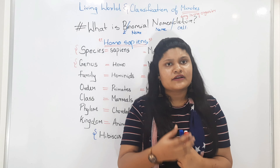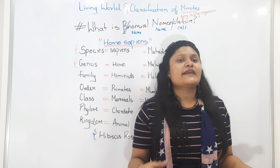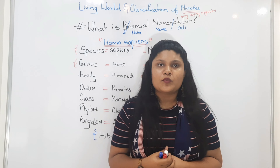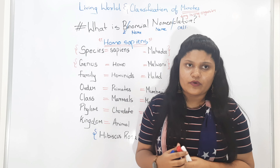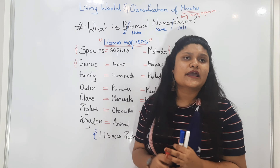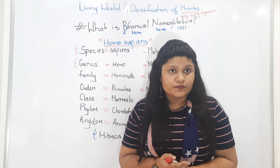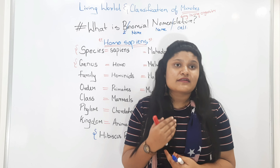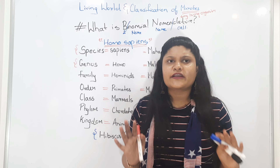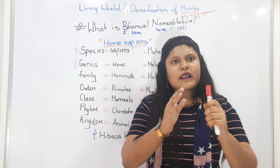Now let's see how an organism's name is given. First, you classify it — is it a plant? Is it a fungi? For example, I have taken the example of a human being. First, what is our kingdom? I belong to which kingdom? Human beings belong to the animal kingdom. So I have classified that I don't belong to the plants, I belong to the animals.